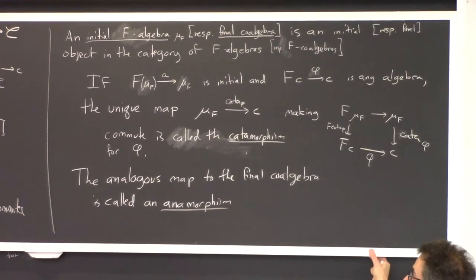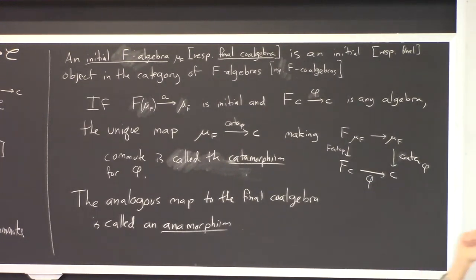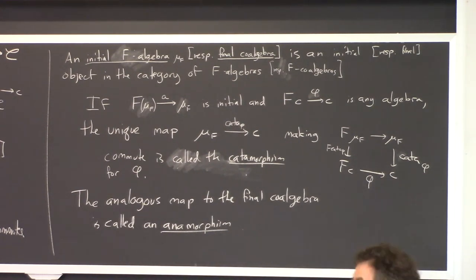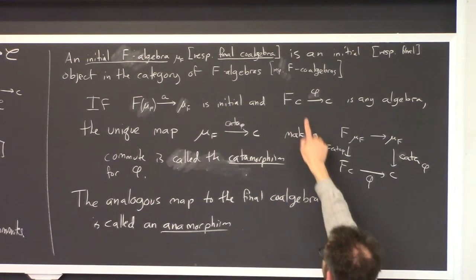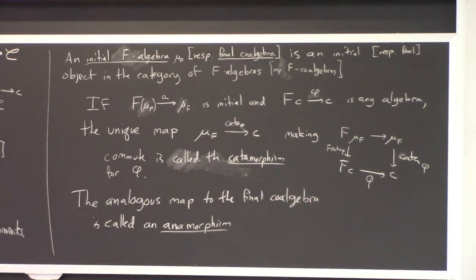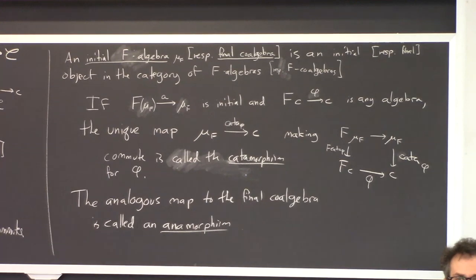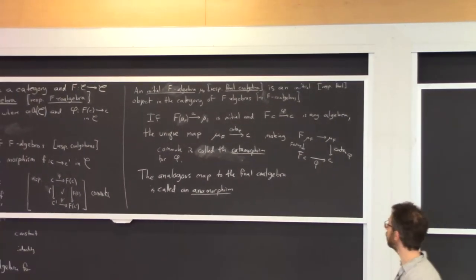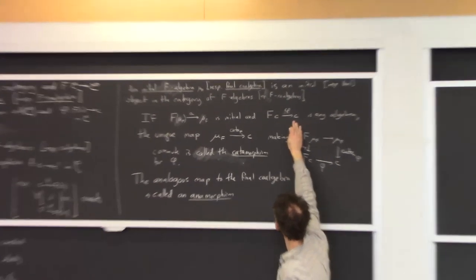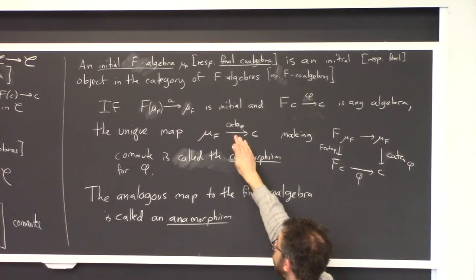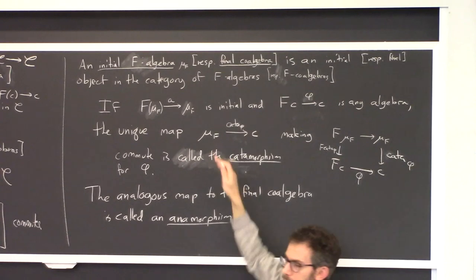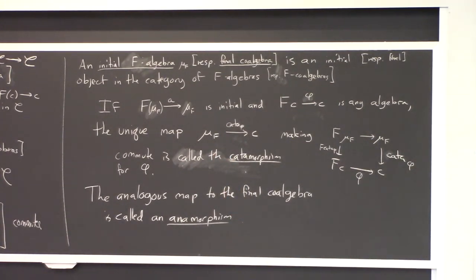The important thing about the initial algebra is that for any other algebra phi you can define, it is basically telling you—for any element of that initial algebra—what you want to do with it. If you have any algebra whatsoever, you get a unique map called the catamorphism for that algebra, from the initial algebra (which I'm calling UF) to your algebra C.